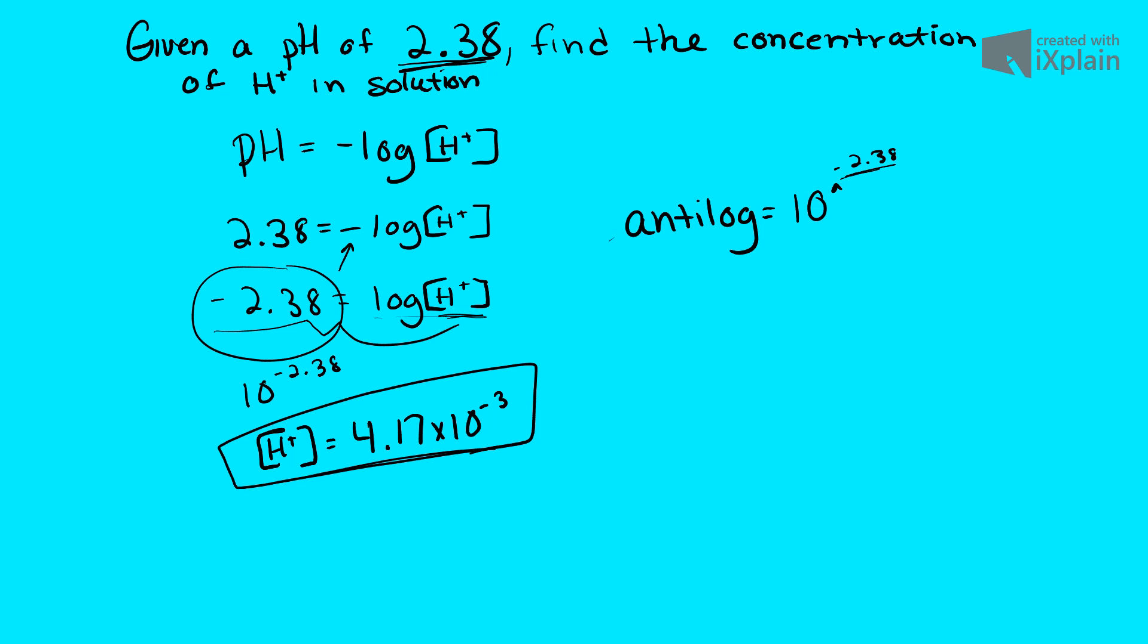So that is our answer from this problem. In recap, the way we did that was we wrote out our pH formula. We plugged in 2.38 because that is the pH we were given. We took the negative from the right side and we moved it to the left, giving us negative 2.38 equals the log of H plus.